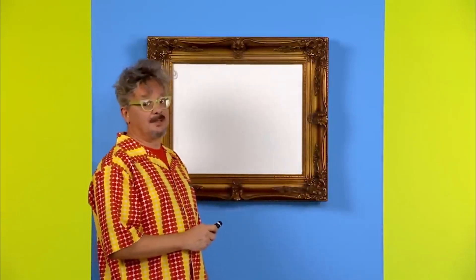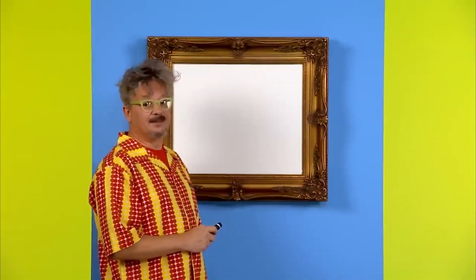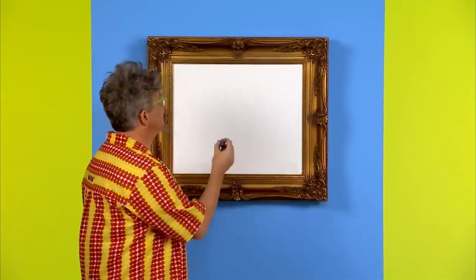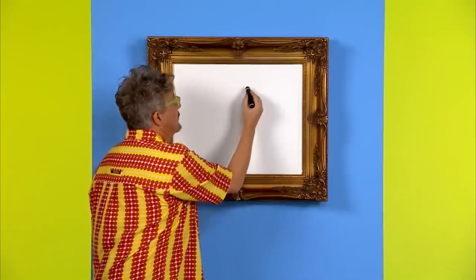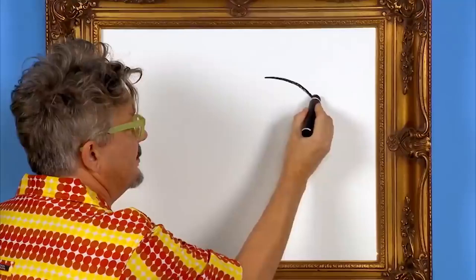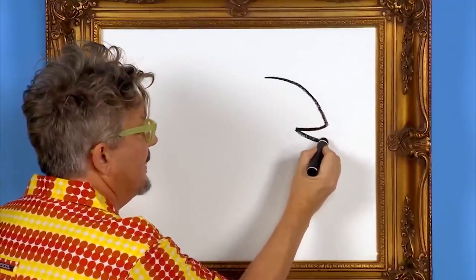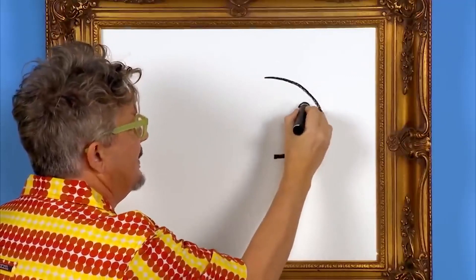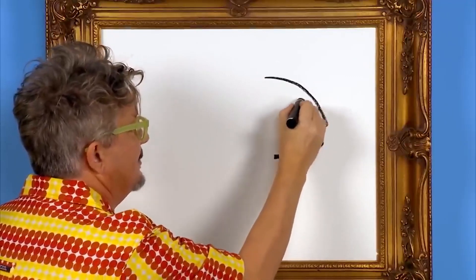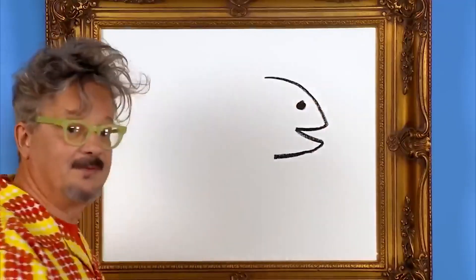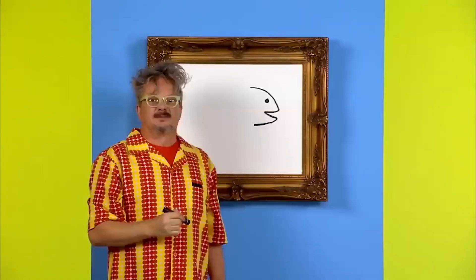First we draw the shape of the fish's head. We draw an arch and we leave a space for a mouth. Yeah, like that. Fish's head.